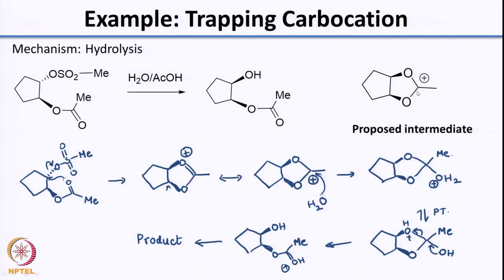Since we are looking at the concept of trapping the intermediate, is it possible for us to trap this carbocation intermediate shown here? The carbocation can react with a nucleophile, and a good nucleophile would be ethanol. Imagine that you are doing this reaction in ethanol. What will happen is that once you generate this intermediate, instead of water, you would have ethanol add in. So at this point you would have ethanol adding in.